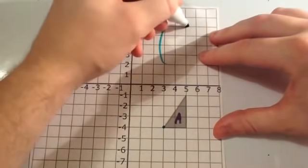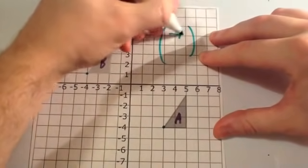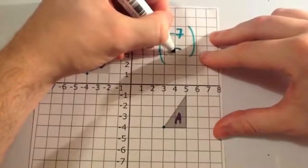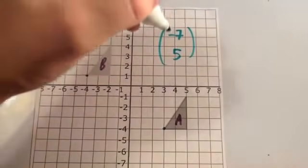So in the vector, 7 squares to the left would be minus 7, and 5 squares up would be 5. So the vector is minus 7, 5.